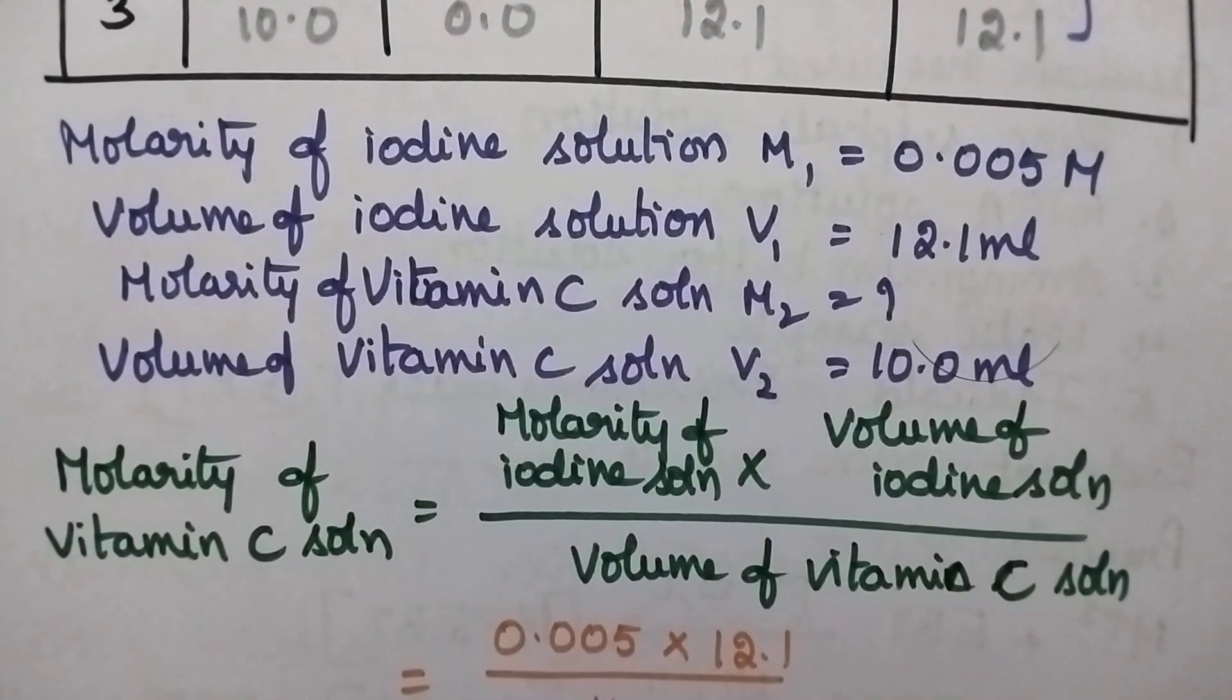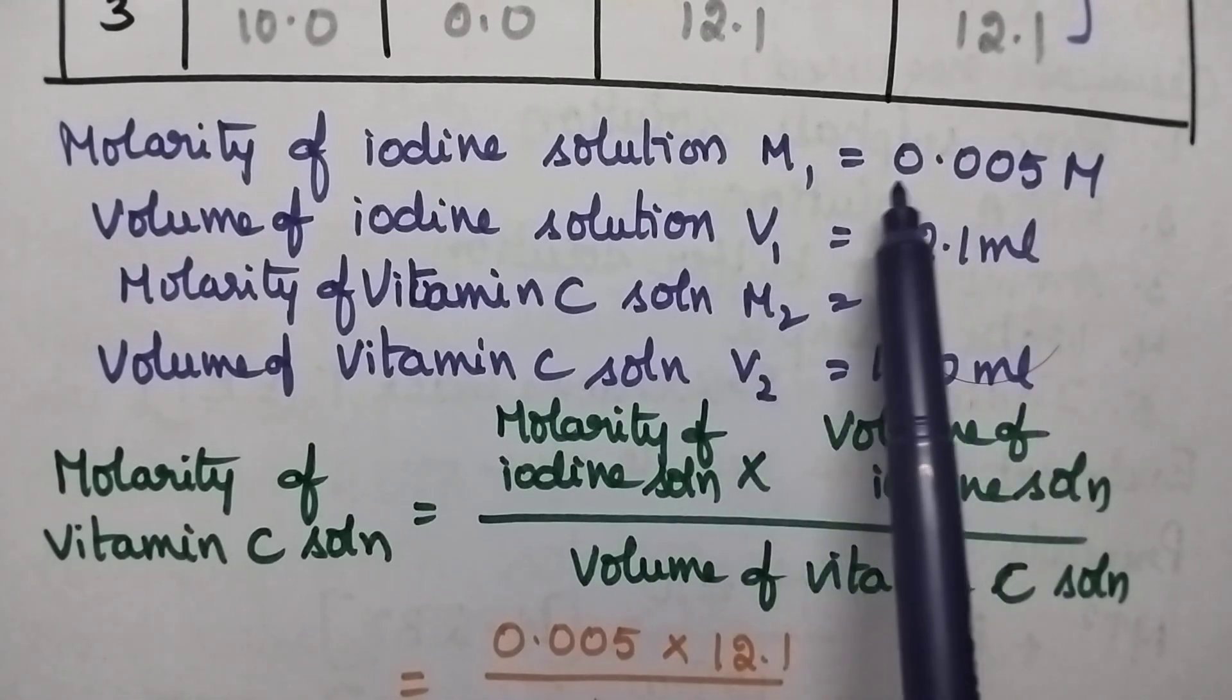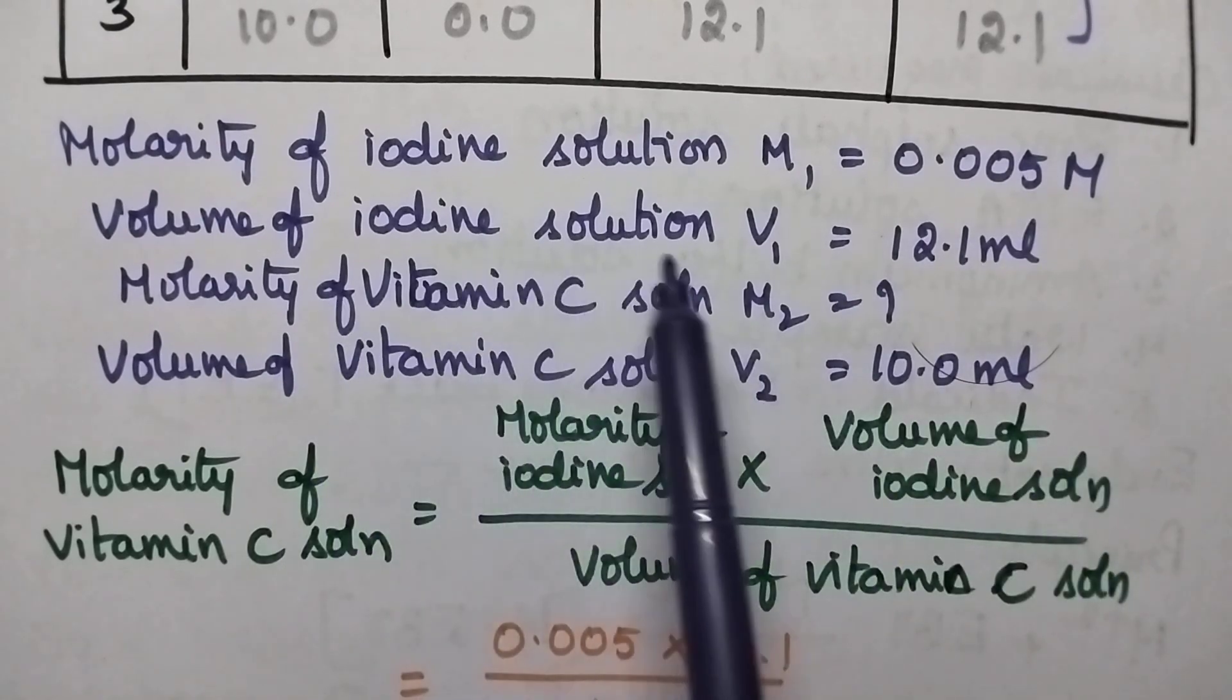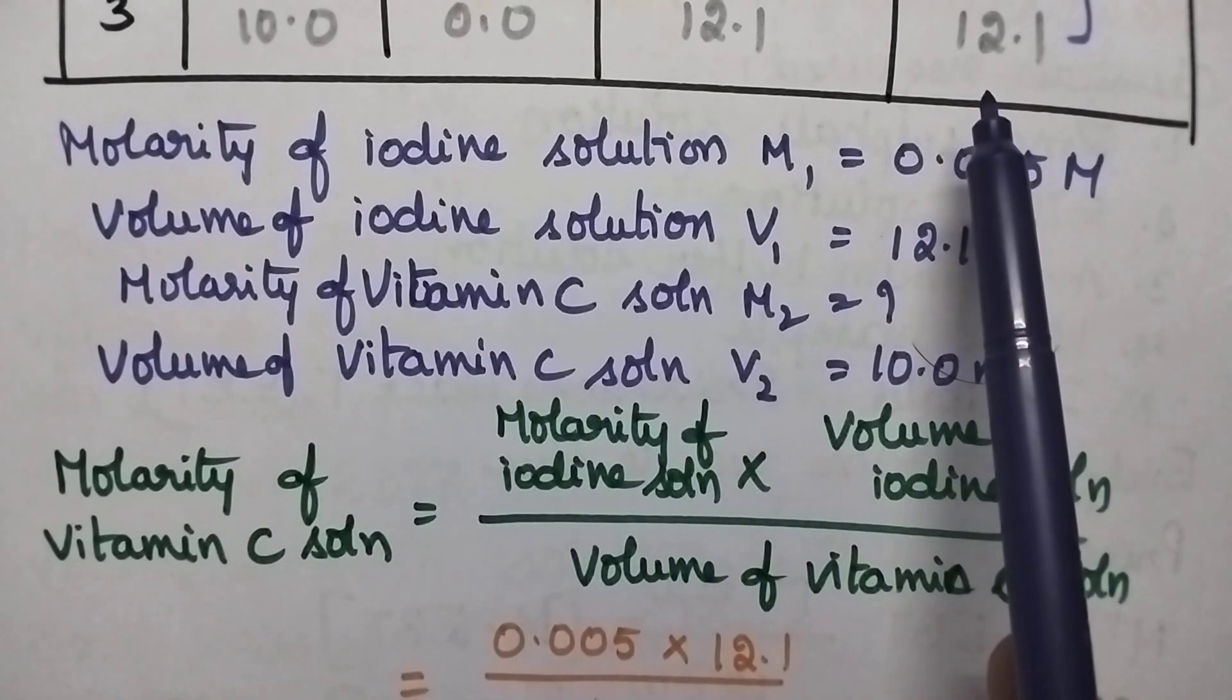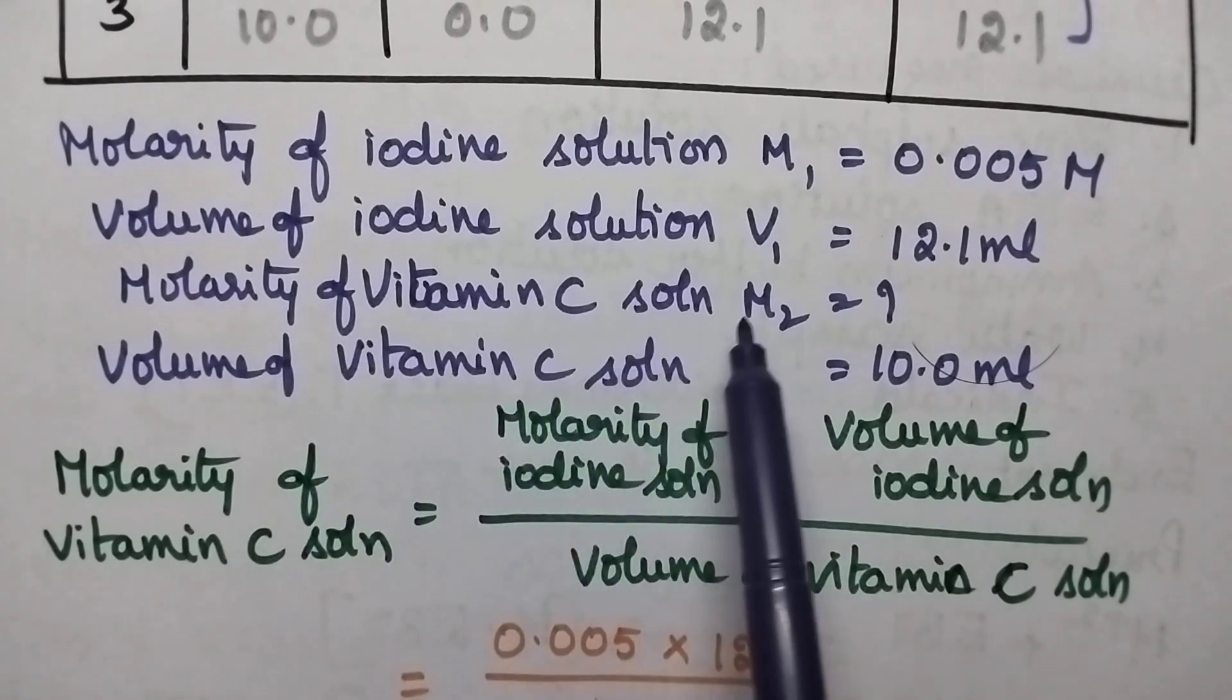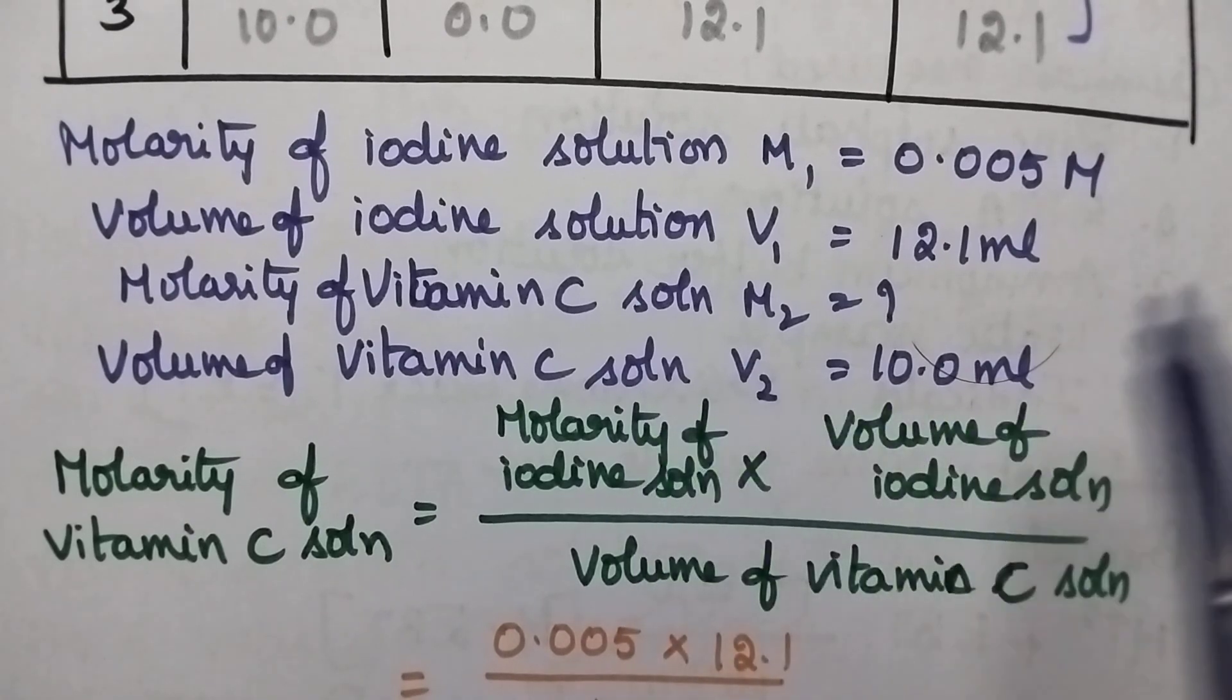Coming to the calculation: molarity of the iodine solution M1 is 0.005 molar, volume of iodine solution V1 is 12.1 ml. Molarity of the vitamin C solution M2 we have to find out, and volume of vitamin solution V2 is 10 ml.